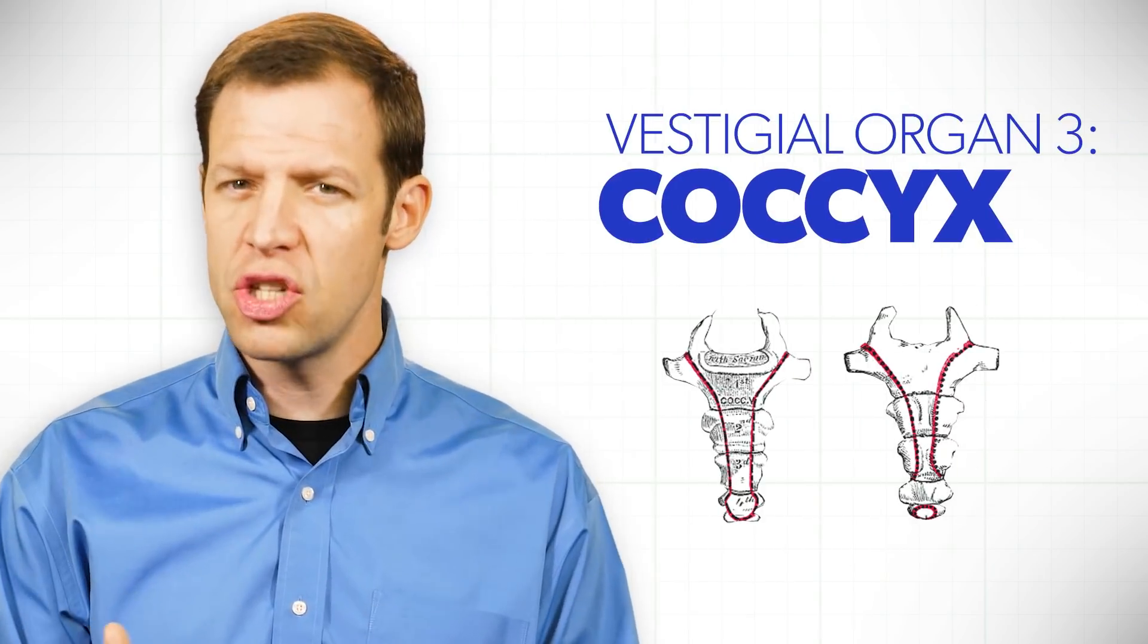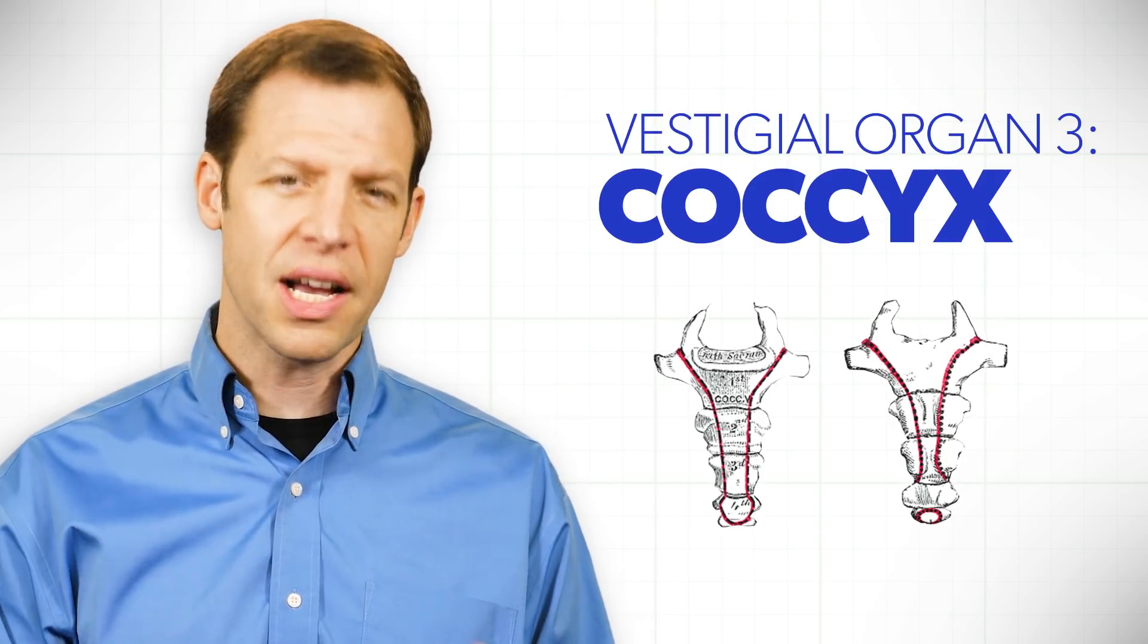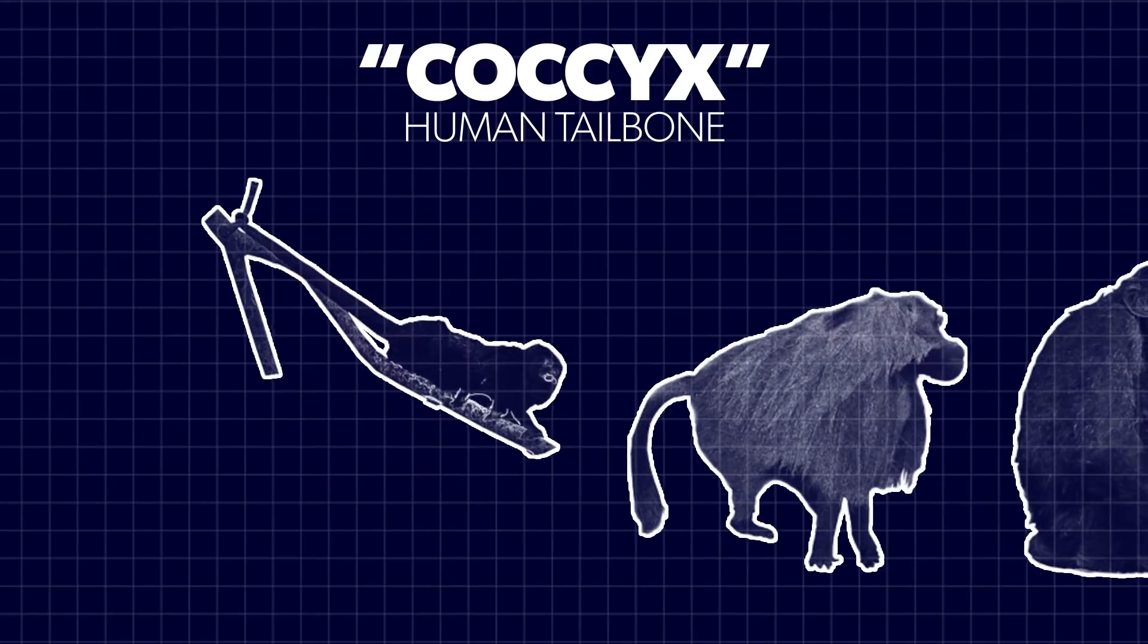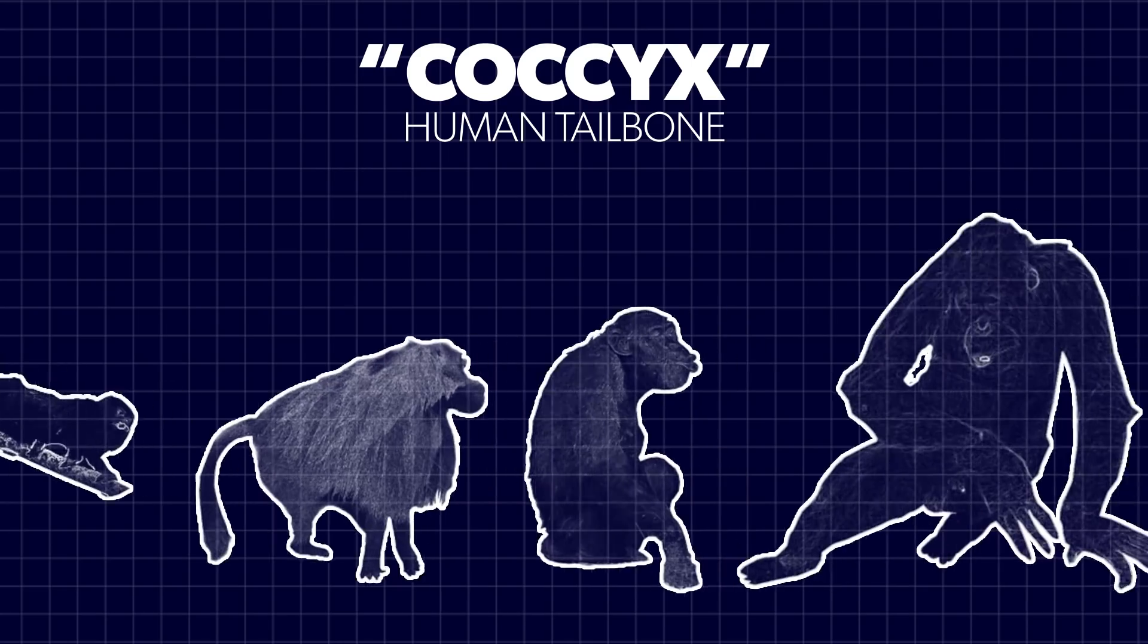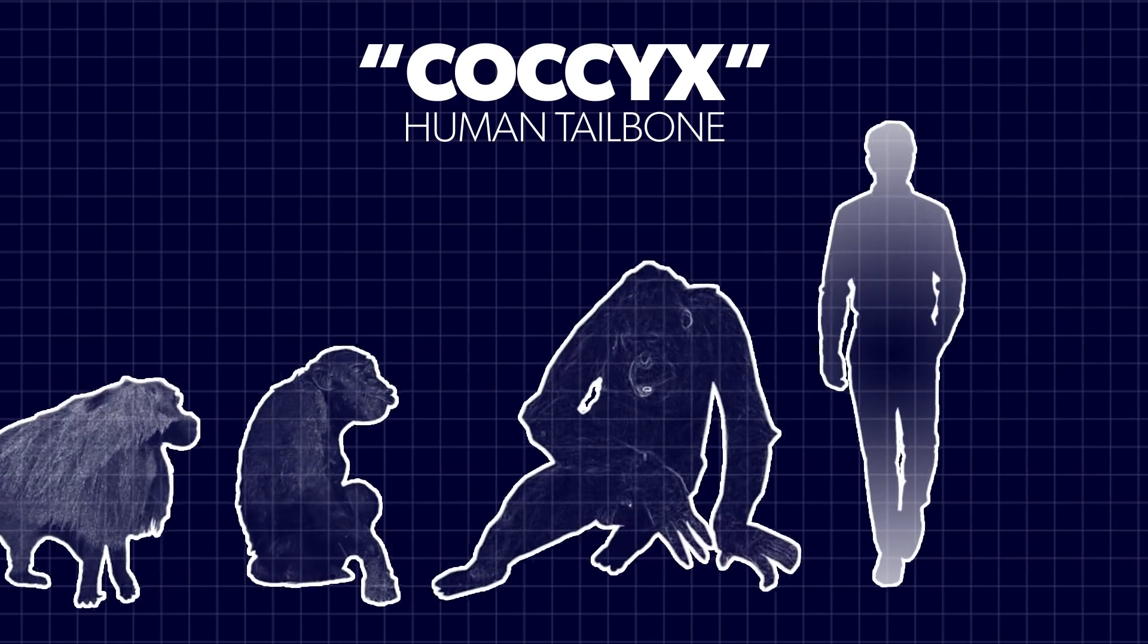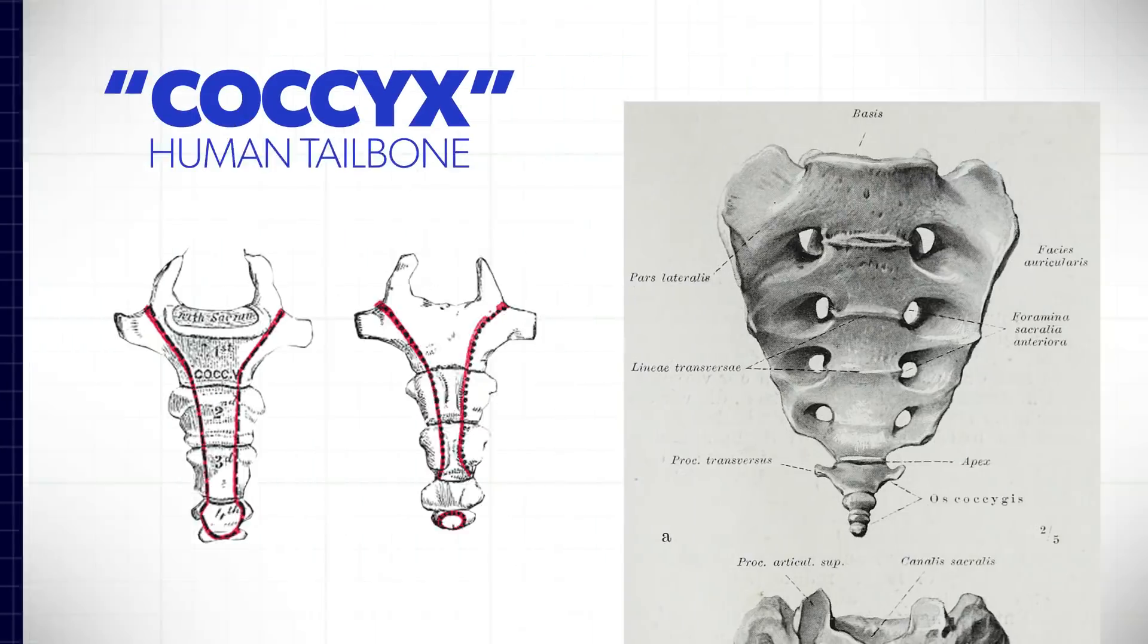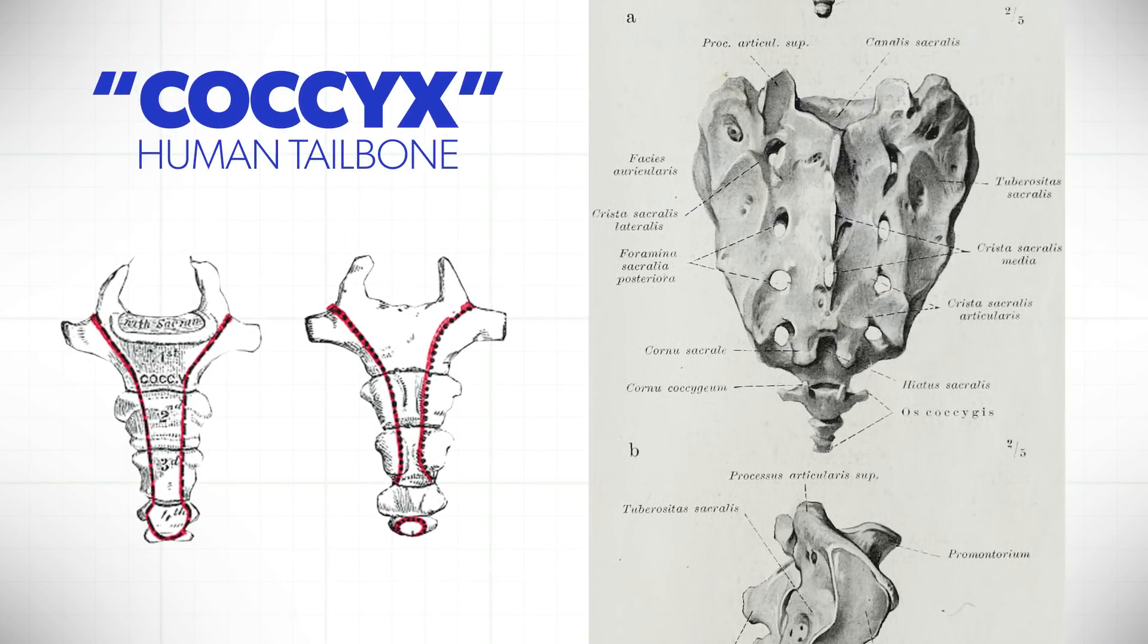The third vestigial organ that we'd like to consider is the idea of the coccyx, the human tailbone. Supposedly, this coccyx, the human tailbone, is a leftover from a time when we had primate ancestors, and they actually had a tail, and they lost that, but the vestige of that is left in the human anatomy. And the problem with that line of thinking is it's certainly not true at all.